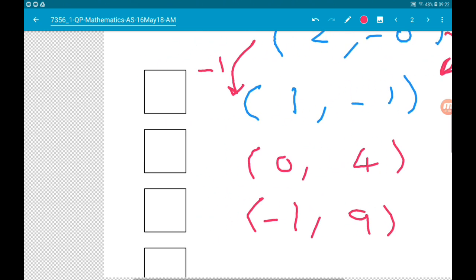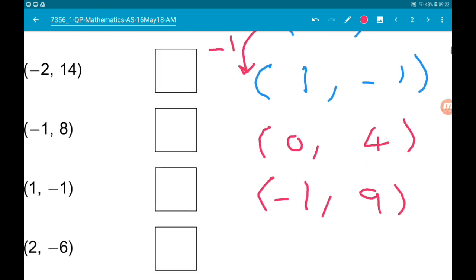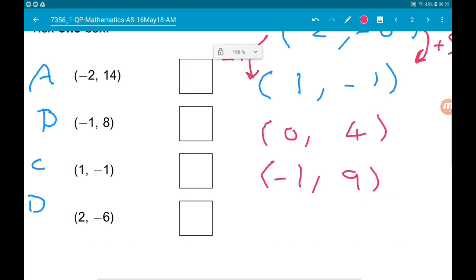B has an x coordinate of minus 1, but the y coordinate is 8, but we've got 9. So point B does not lie on the line connecting C and D.